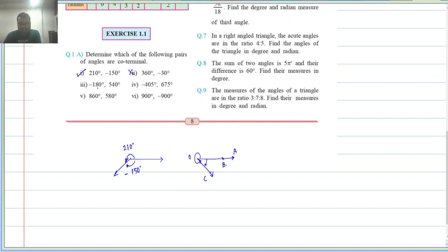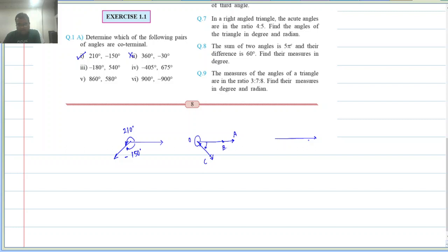Next: minus 180 and 540. Let us draw 540 first: one full rotation is 360, plus another 180 degrees. So 540 ends up pointing like angle AOB (at 180 degrees). Minus 180 also points in the same direction. Both angles have the same initial and final arm. So these are coterminal angles.